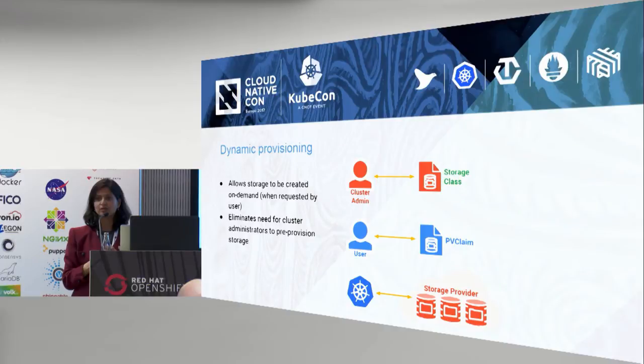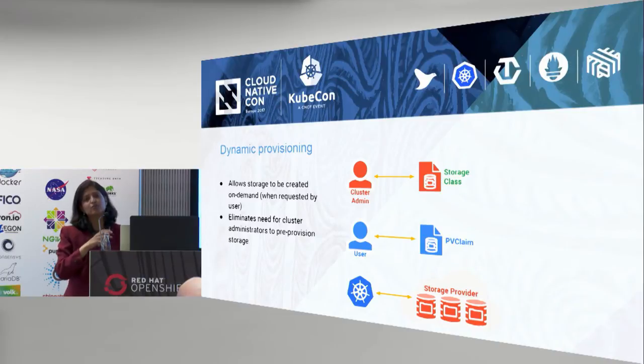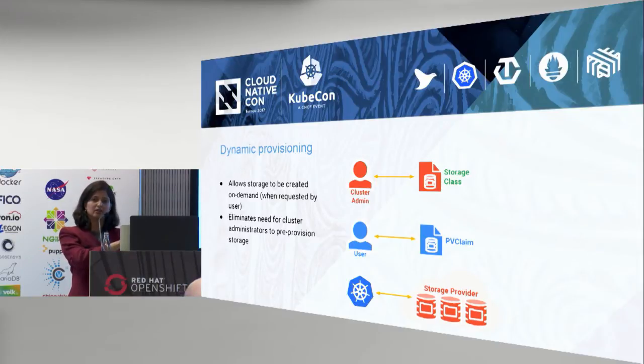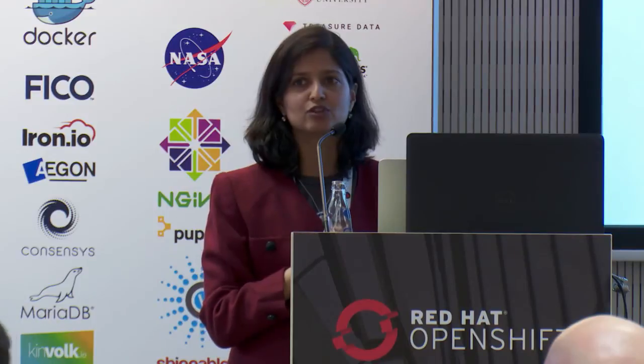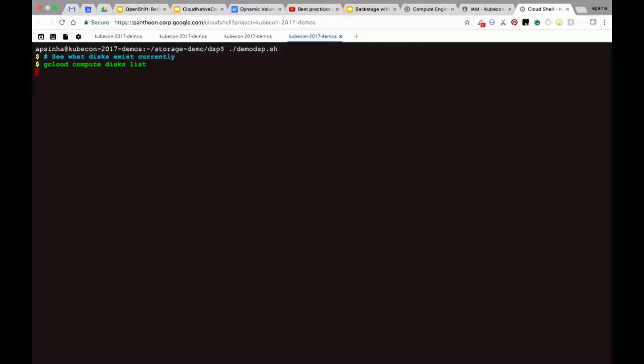Dynamic storage enables the concept of abstract storage classes. The cluster admin can say: I have a storage class that is an SSD or a standard disk, but it doesn't actually need to be provisioned until the persistent volume claim is created. That's the essential gist of dynamic storage provisioning. Now let's do the demo. This is the three-node cluster in Google Cloud — you are seeing the local disk attached to each of the nodes. We haven't created any additional disks.